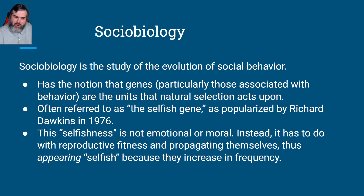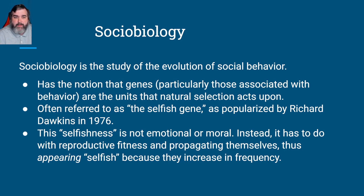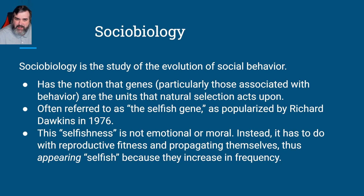It's kind of hard to see a verb being expressed as a gene. Normally we think of genes as nouns — objects, things, features. In this case, we're talking more about behaviors. But this is often referred to as the selfish gene, which we mentioned earlier with E.O. Wilson a little bit.